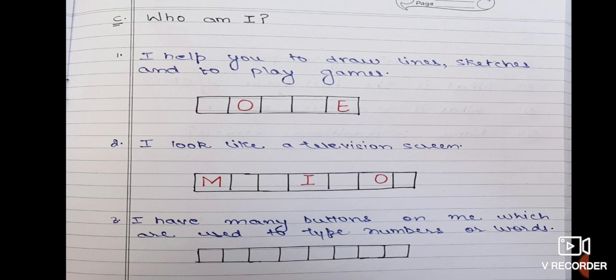Third one is I have many buttons on me which are used to type numbers or words. Now in this I have not given any clue to you because this also you have to learn in both ways, ok? You have to learn with the options, with the missing letters, and without any letters also. Clear?